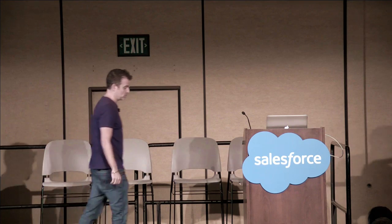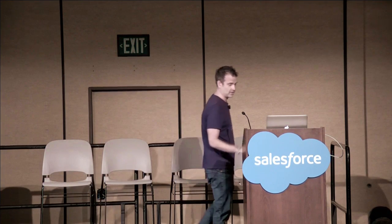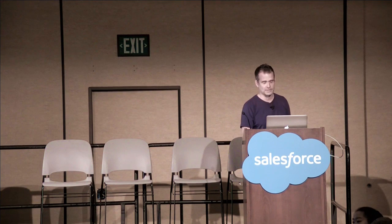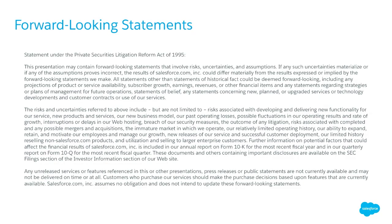Before we jump into the microservices, let's give you the wall of text you've probably seen several times today — the safe harbor statement. Simply put, base your purchasing decisions on features that are generally available. We're going to talk about a lot of GA features, but also some public and perhaps private beta features.